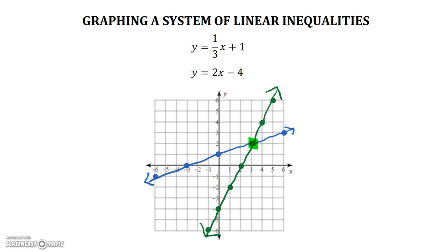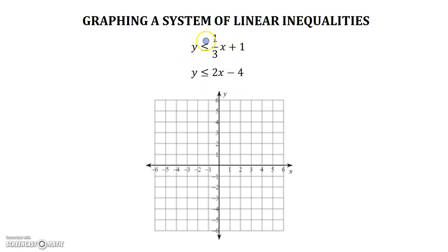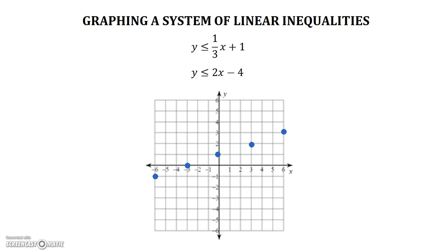Let's take a look at an example. Here we have a system of linear inequalities — notice the inequality signs. So that means that when we graph them, we're going to have to do that extra step of shading. So let's go ahead and graph both of these inequalities on the same graph. Graphing the first one: y is less than or equal to one-third x plus one. Y-intercept at one, slope at one-third. We're just graphing the points like normal, which is our first step when we graph an inequality. Looking at the inequality sign, it's less than or equal to, which means that our line is going to be solid.